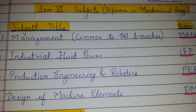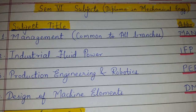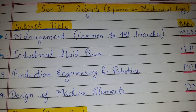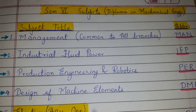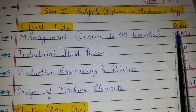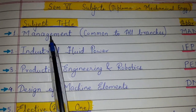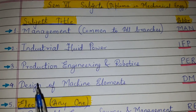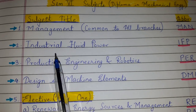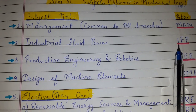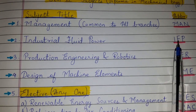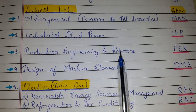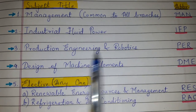Today's topic of discussion is the subjects for semester 6 for diploma in mechanical engineering — their subject titles and abbreviations. Management, which is common to all branches, has the abbreviation MAN. Industrial Fluid Power has the abbreviation IFP, and Production Engineering and Robotics has the abbreviation PER.